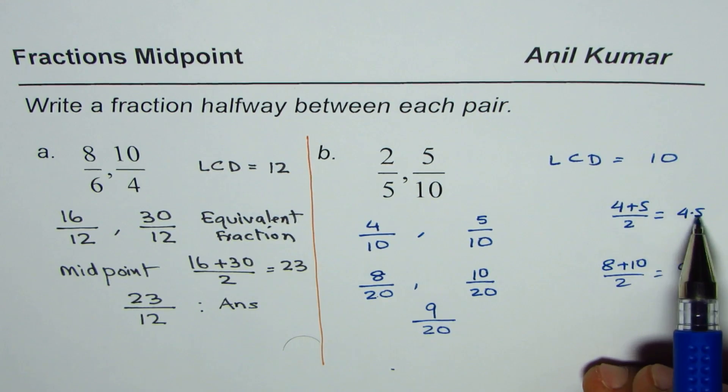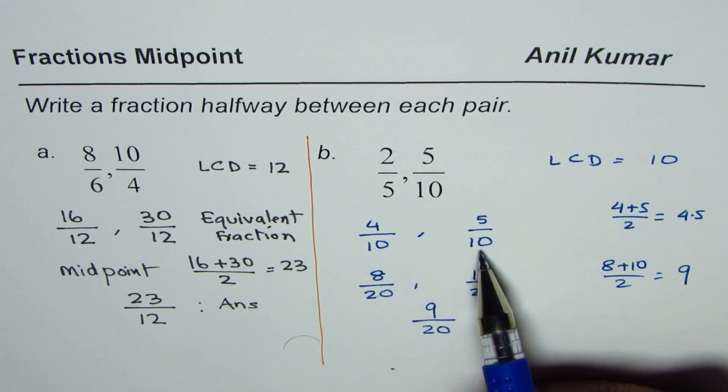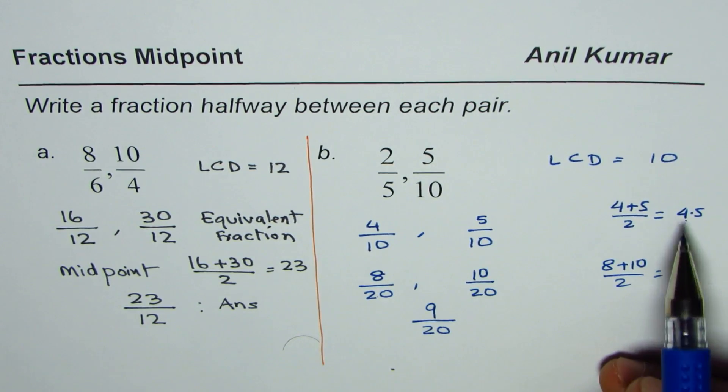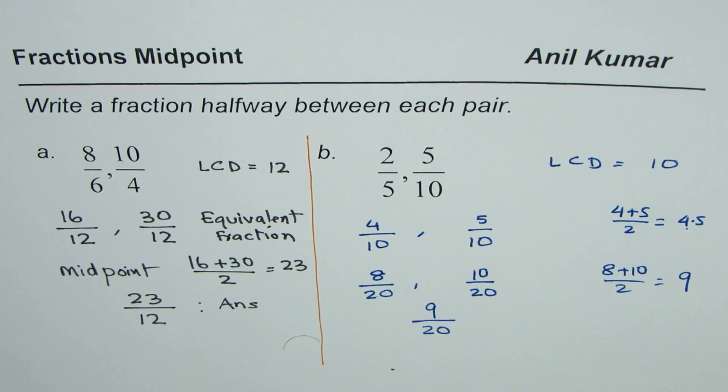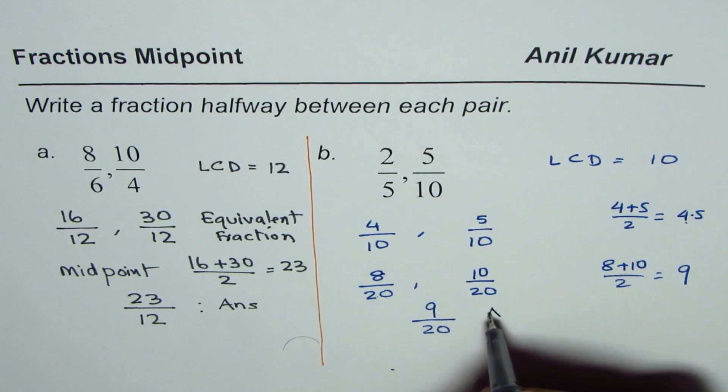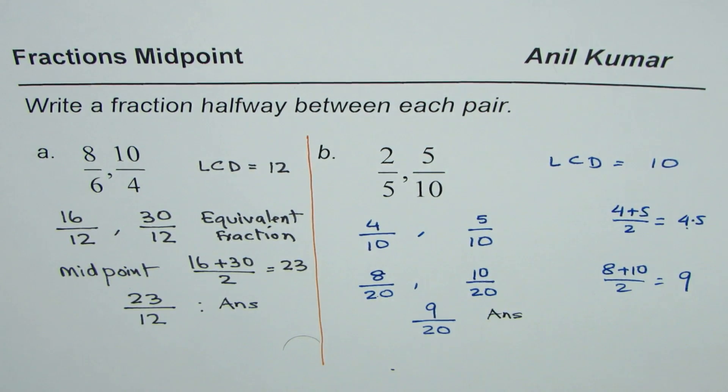If you write 4.5 over 10 it's kind of an incorrect answer. Avoid that. That's the whole idea. I hope you appreciate this concept. Thank you and all the best.